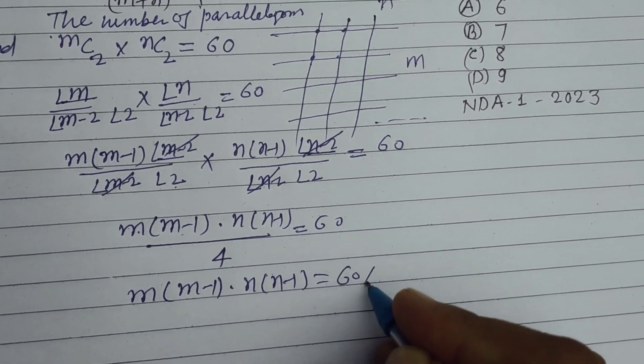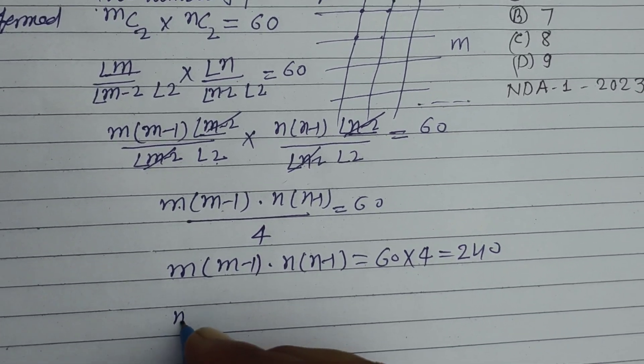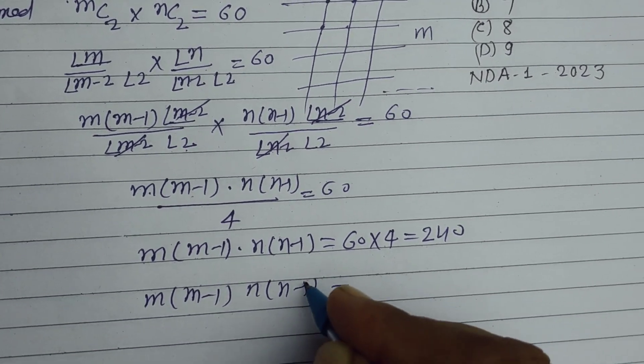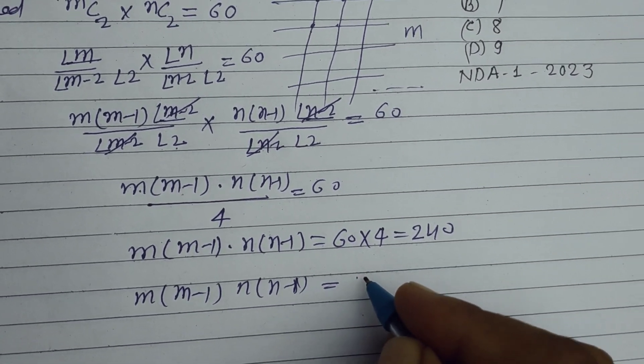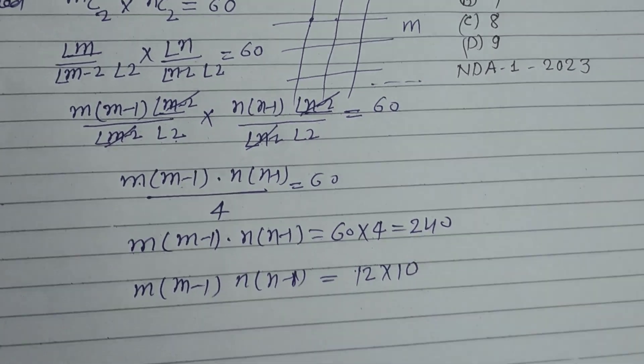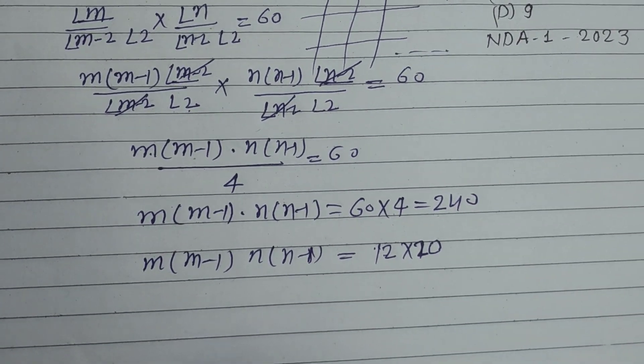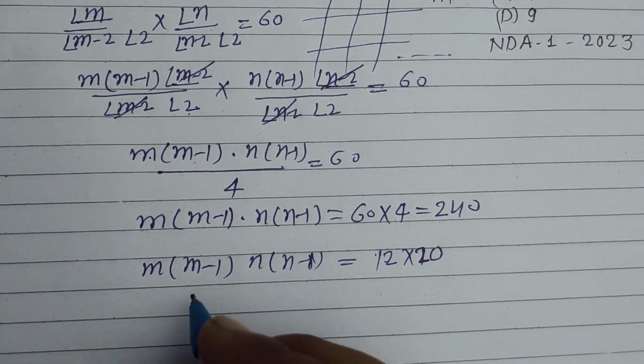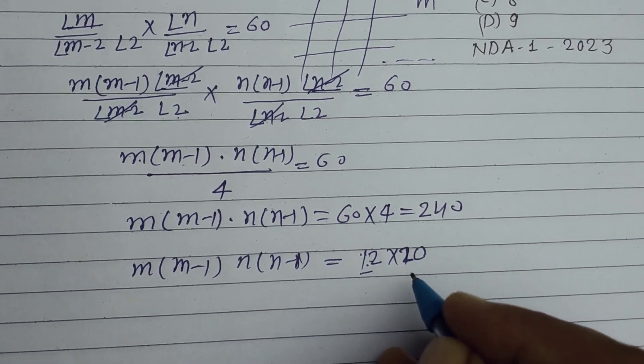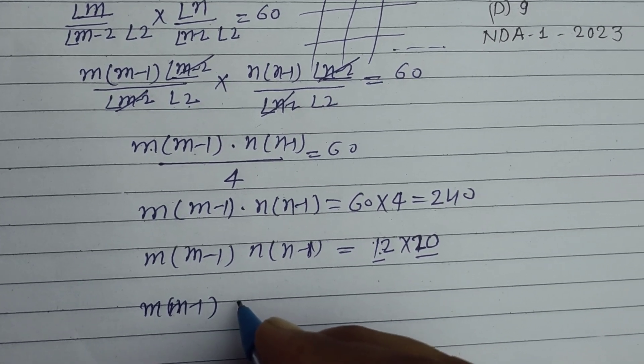60 times 4 is 240. Now we make the factor of 240 in such a form that it becomes the product of two different consecutive numbers, like m into m minus 1 and n into n minus 1.